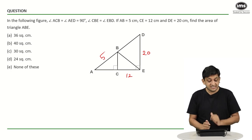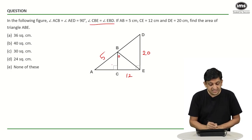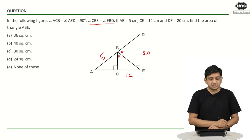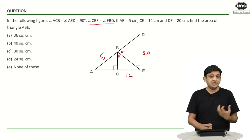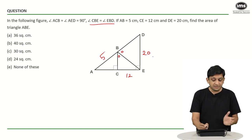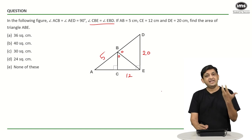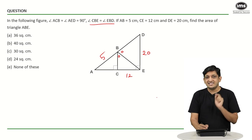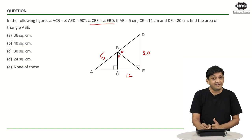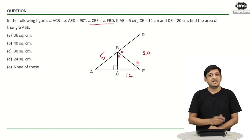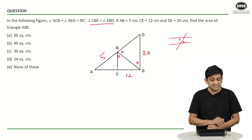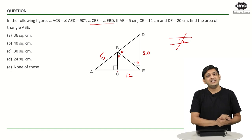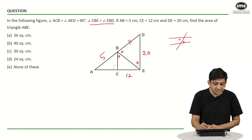Since BC and DE are both perpendicular to AE, they are parallel to each other. Using the property of alternate angles with transversal BE, angle CBE equals angle BED. Because angle CBE equals angle DBE and now angle DBE equals angle BED, in triangle DBE these two angles are equal, which means sides DB and DE must be equal. So if DE is 20, then DB is also 20.